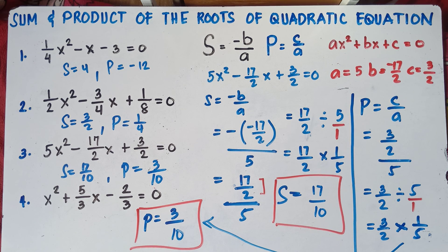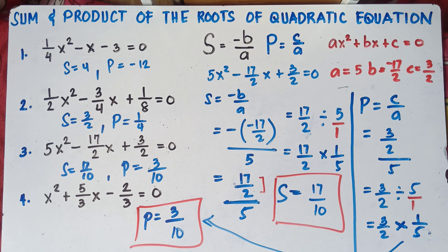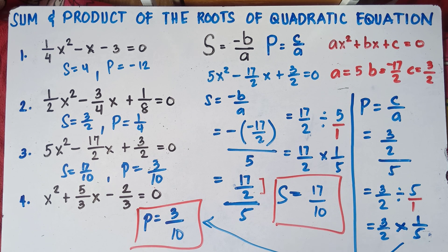That's it, class. That's how you find the sum and product of the roots of a quadratic equation when the values of a, b, and c are fractions. It's quite easy, but it takes time because of the reciprocal steps. Try to answer number 4 and put your answer in the comment section below so I can check your understanding. Once again, this is Teacher MJ — I hope you learned something new today. Don't forget to like, share, and subscribe. Bye-bye!